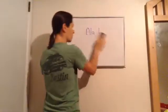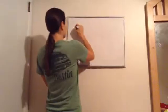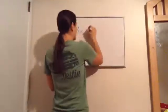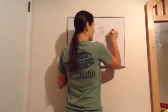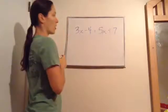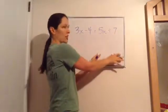Algebra 1, Lesson 26. This is on more complicated equations — it gets a little bit more complicated. This time we're going to have X's on both sides. Our whole goal is to get X's on one side, numbers on the other.